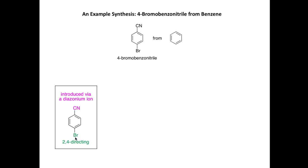Firstly, the bromine atom is 2,4-directing, and we need to introduce a substituent at the 4 position with respect to bromine. So it means that we can introduce the bromine atom first, and then we can introduce this nitrile group. Secondly, we can recognize that this CN, this nitrile group, can be introduced by a diazonium ion.